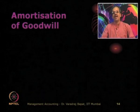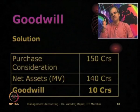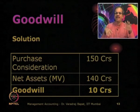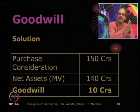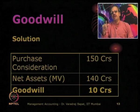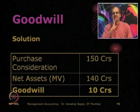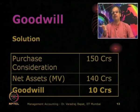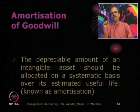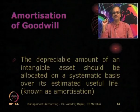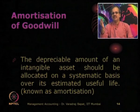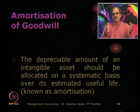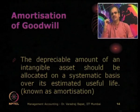Now let us discuss amortization. A has purchased the business of B and paid 10 crores more, which is shown in A's balance sheet as goodwill. You cannot show this goodwill forever. Just as all other assets are written off through depreciation, goodwill must also be written off. This process of writing off goodwill is known as amortization — the depreciable amount of an intangible asset should be allocated on a systematic basis over its useful life.